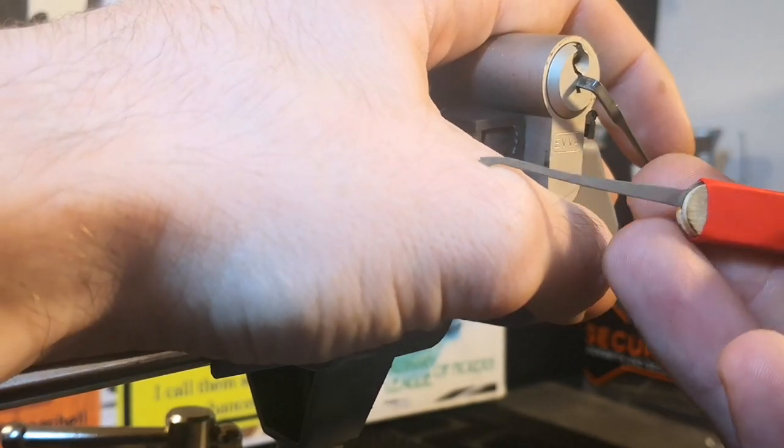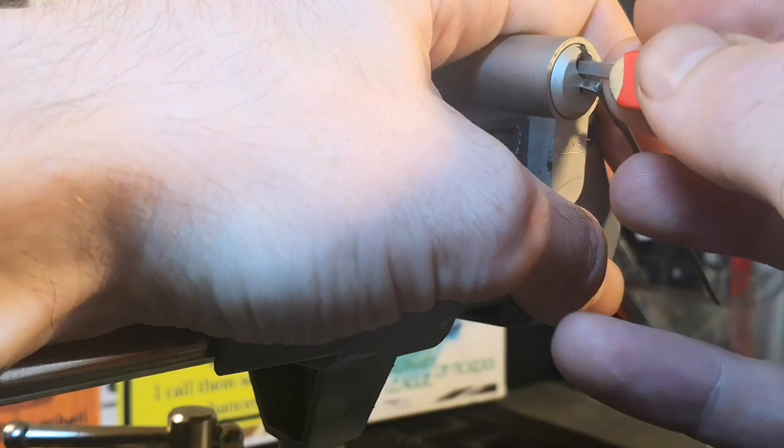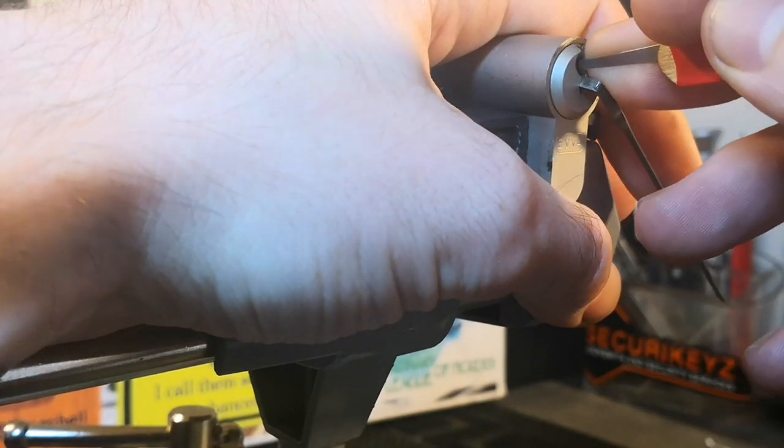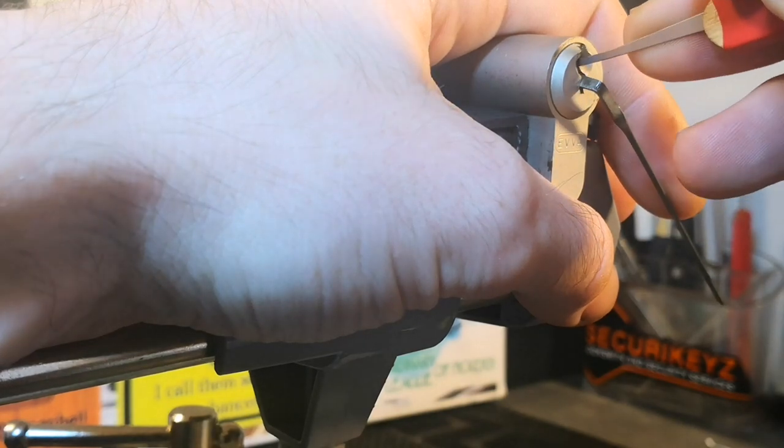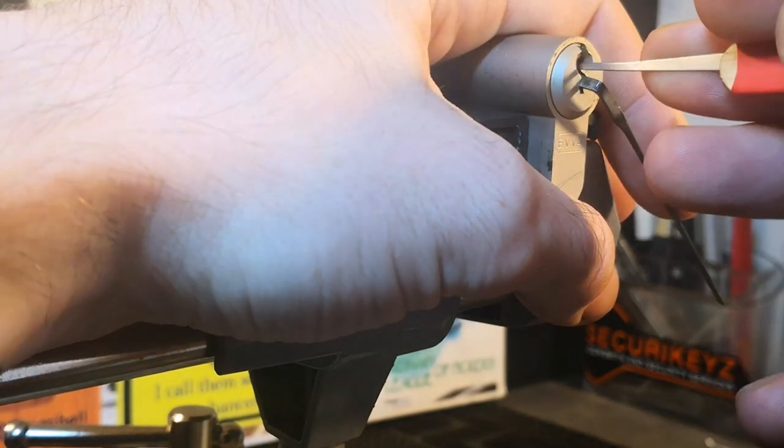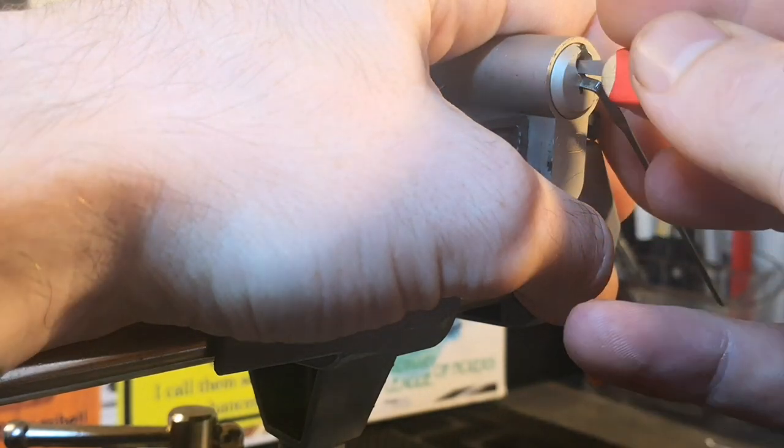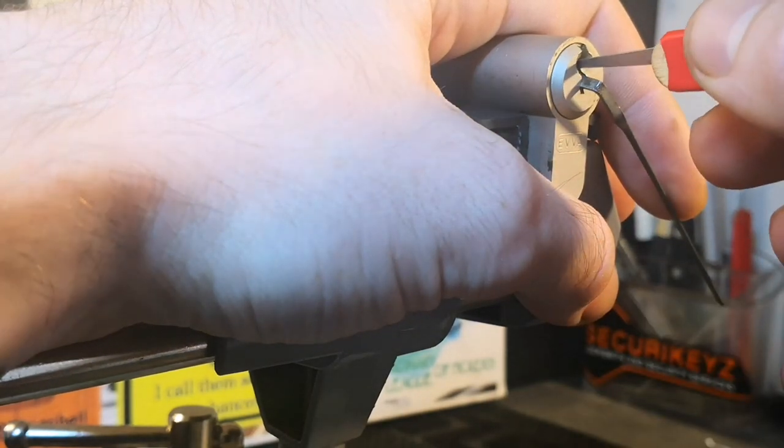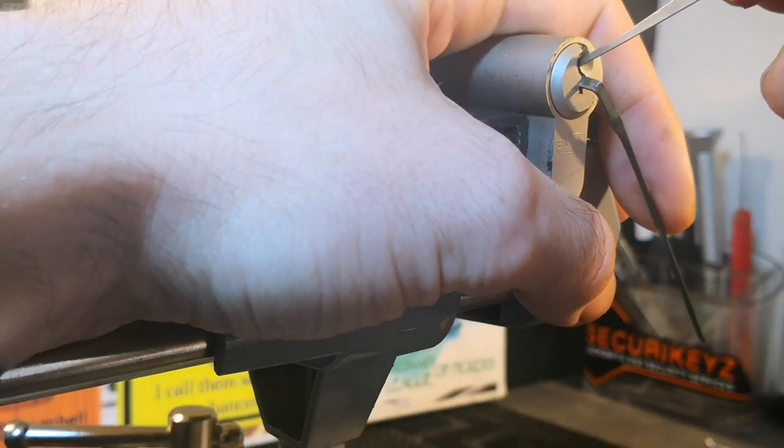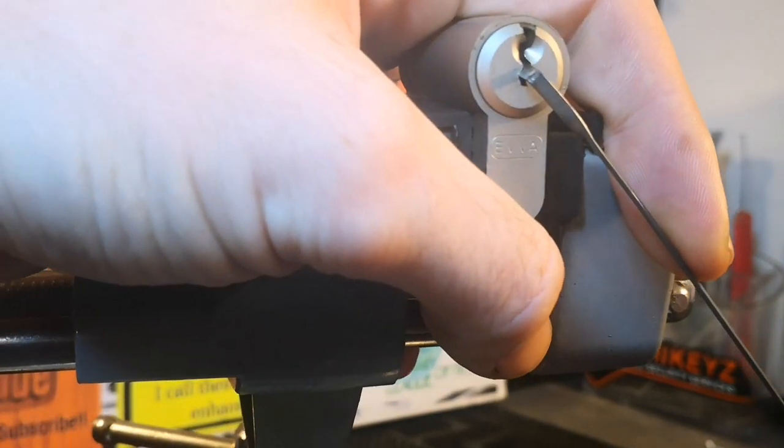I'm going to go for an offset hybrid. Alright, so little click off five that time. Little give off two. Nothing on one. There we go. Dropped into a nice false set there off one. Awesome.